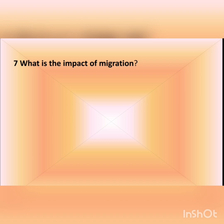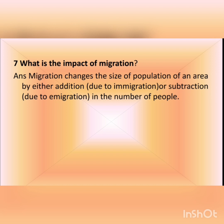The seventh question is: what is the impact of migration? The answer is migration changes the size of population of an area either by addition due to immigration or subtraction due to emigration, resulting in significant changes to a region's population.